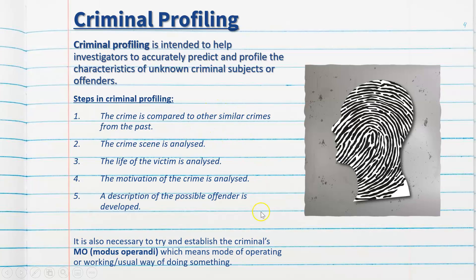There are steps involved in criminal profiling, like we practised in class with various false crime scenes. First, the crime is compared to other similar past crimes to see if a serial killer or serial offender is involved. Then the crime scene itself is analysed extensively with lots of photographs. The victim's life is also analysed — this is called victimology — to look at the background of the victim and see if it gives clues about why that person was targeted. Finally, the motivation of the crime is analysed: was it a crime of passion or committed in cold blood?